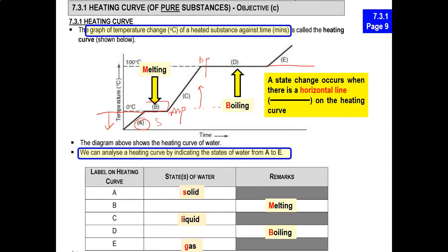Coming back to part B — as we know, for part B, it is melting. What happens during melting is the solid is slowly changing to the liquid state. It doesn't change instantly. That means that at part B, there are actually two states — it is a mixture of solid and liquid.